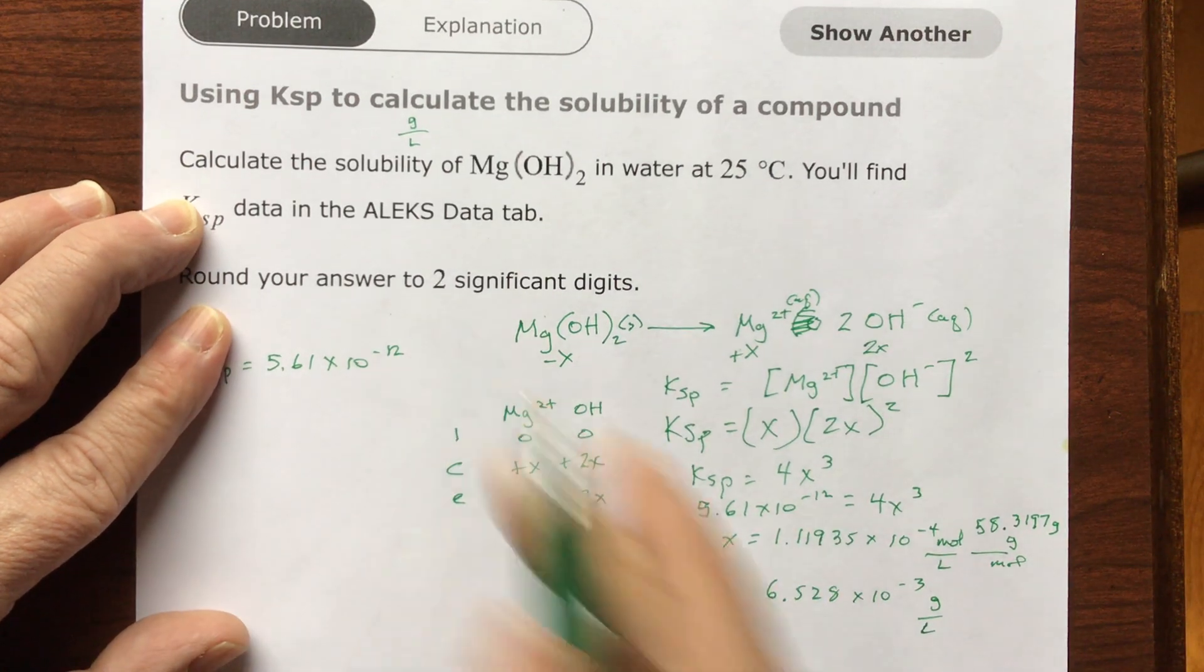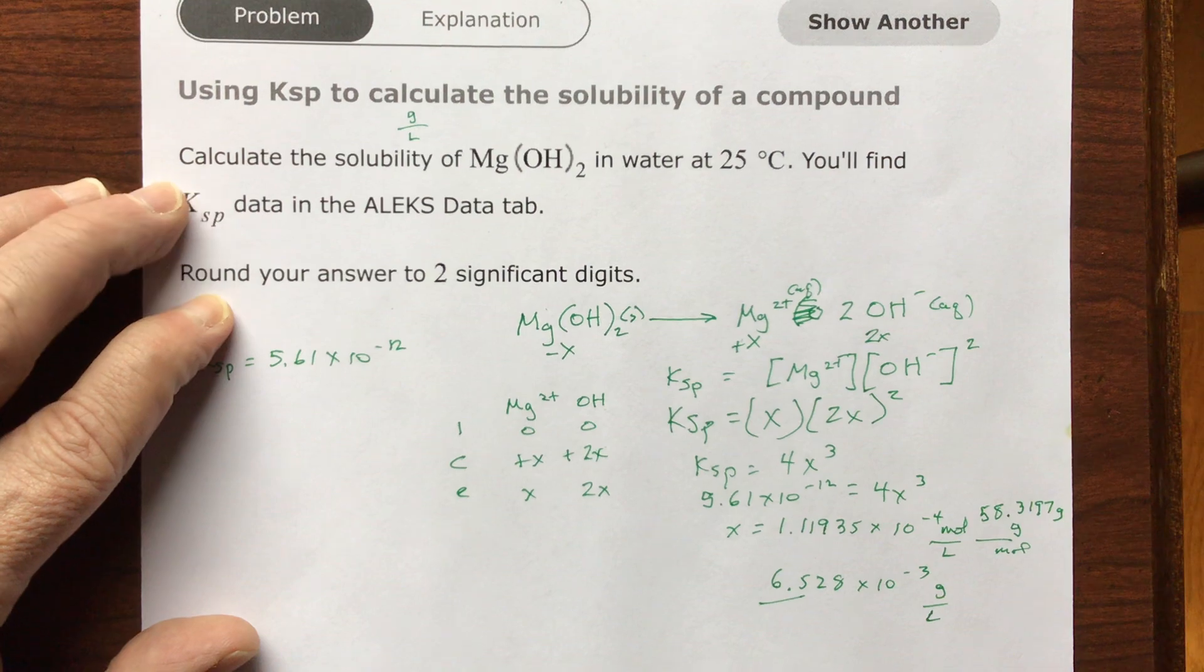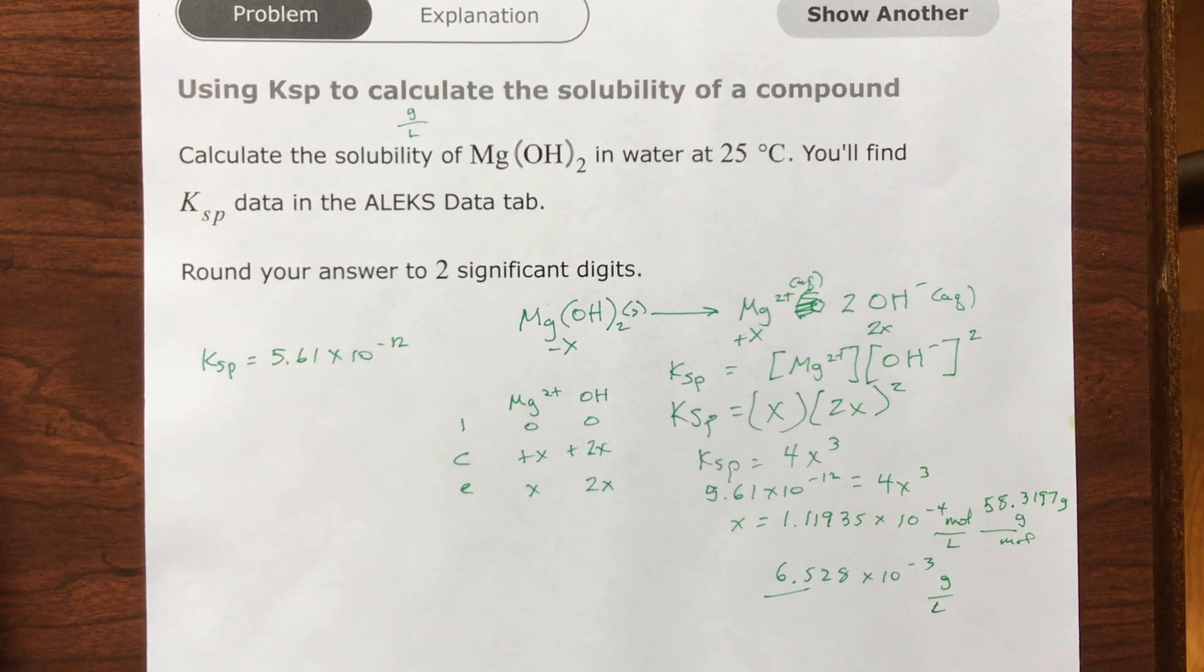Multiply that together, and I get 6.528 times 10 to the minus 3 grams per liter. And they want two significant digits, so it'll be 6.5 times 10 to the negative 3 grams per liter. I hope I help you.